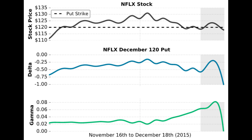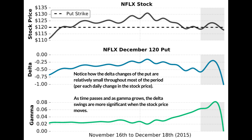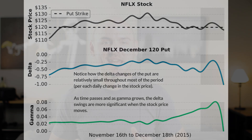We can visualize this concept by looking at the Netflix chart, which shows changes in Netflix's stock price relative to changes in the 120 put's delta and gamma as time passes. In the shaded region at the end of the period, the 120 put is at the money because Netflix's share price is around $120. The gamma of the 120 put is growing more and more as the option approaches expiration, and we can see wild swings in the put's delta in those final days before expiration.